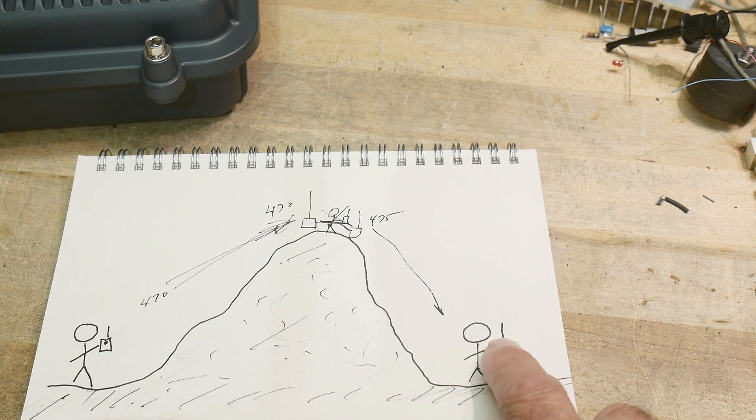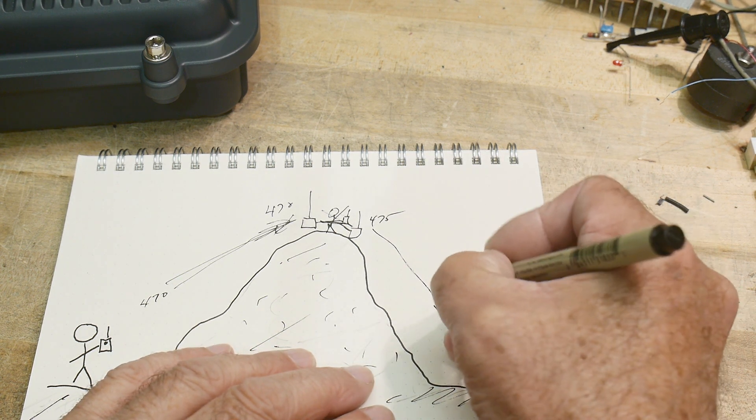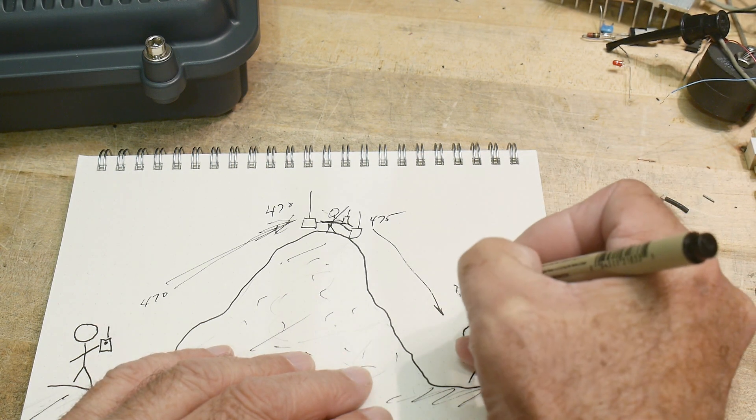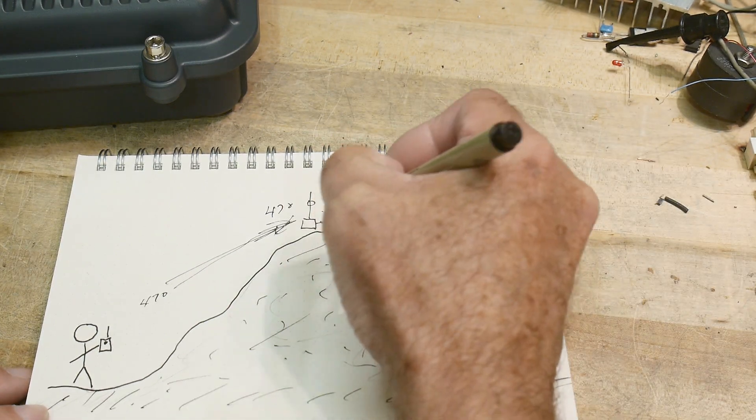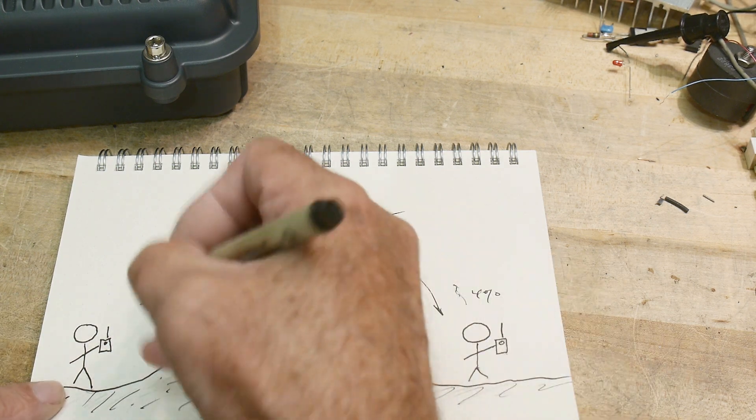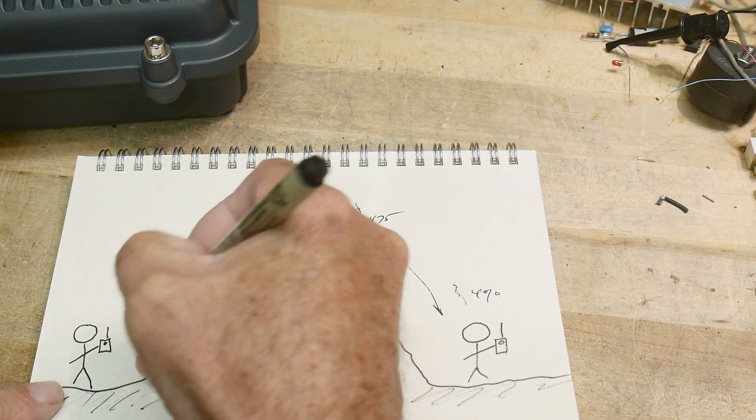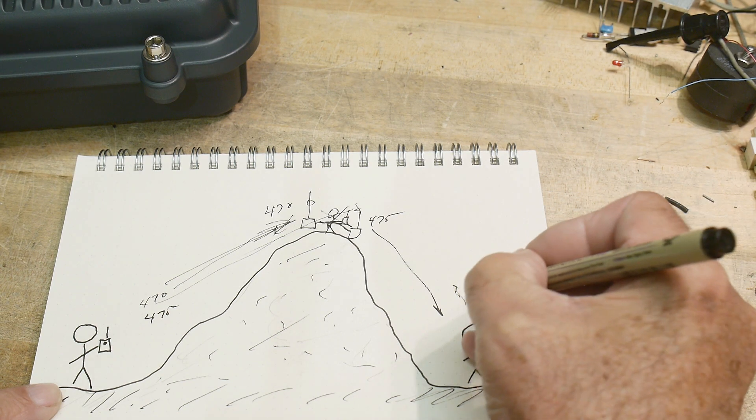So this guy transmits up at 470. It talks to this antenna and then this antenna transmits and it's high enough that it transmits back down to this guy. So he has to listen on 475 and this guy has to listen on 475 but it's going to transmit on 470.